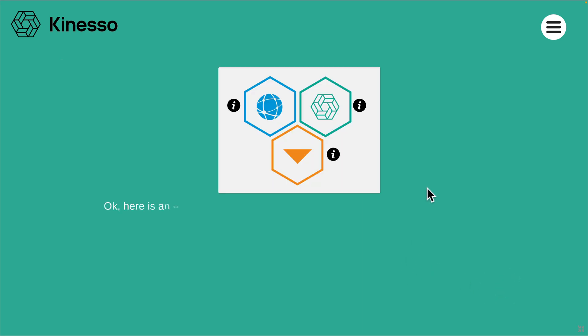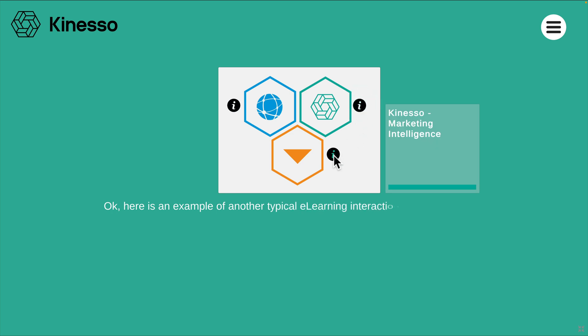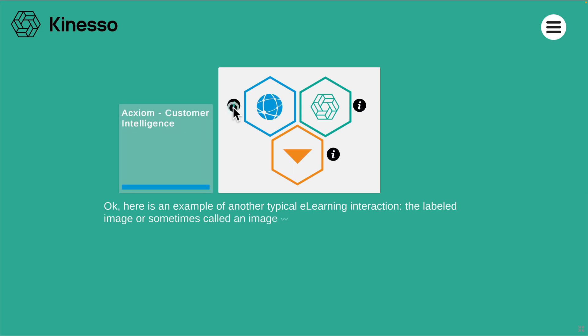Here is an example of another typical e-learning interaction, the labelled image or sometimes called an image with hotspots. Click on the info icons to view the labels. When you are finished, click the next button to continue.